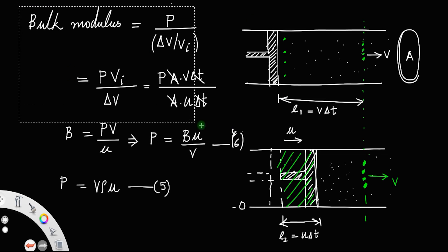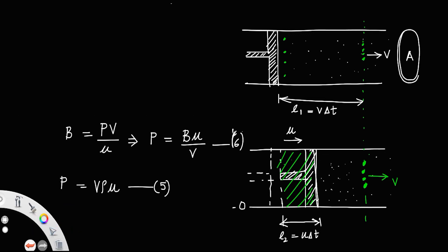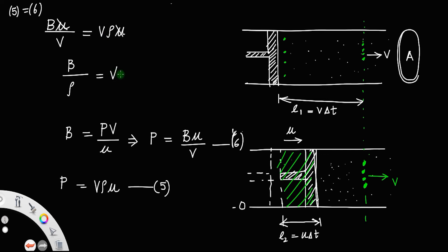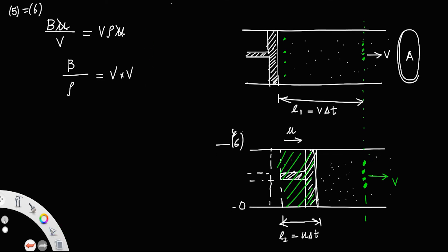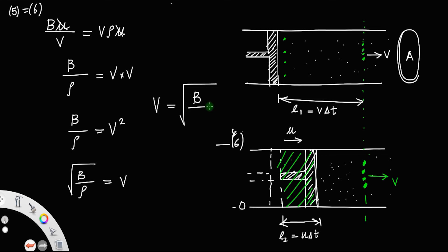Comparing equations 5 and 6, both give the magnitude of pressure, so we can equate them: B·u/v = v·rho·u. Cancelling u and rearranging, we get B/rho = v squared, which means v = square root of B/rho. That is, the velocity of the longitudinal wave in an elastic medium is the square root of the bulk modulus divided by its density. This is the expression for the velocity.